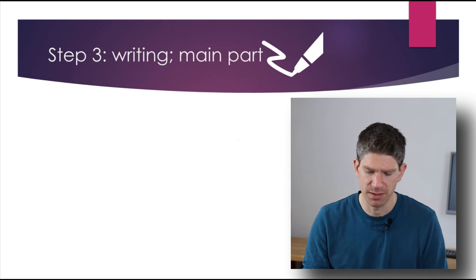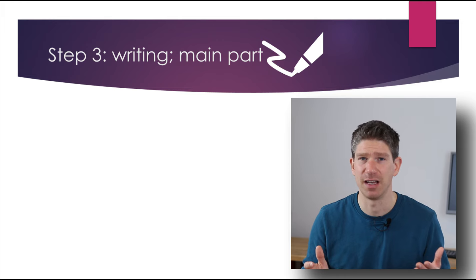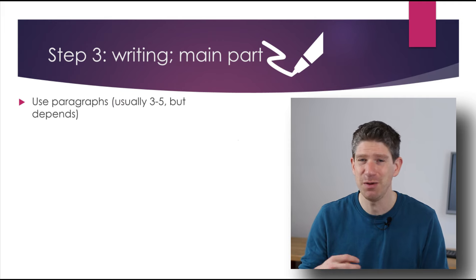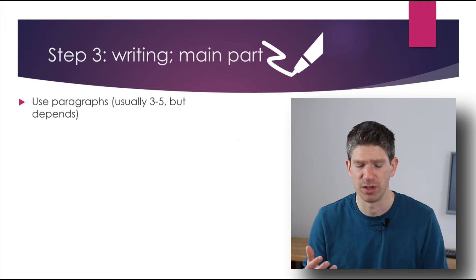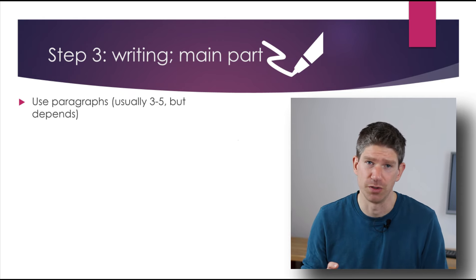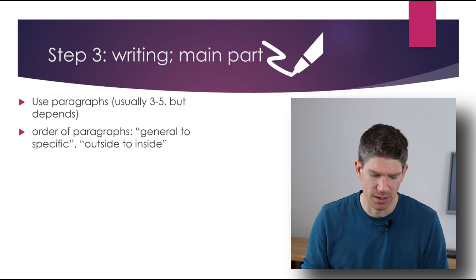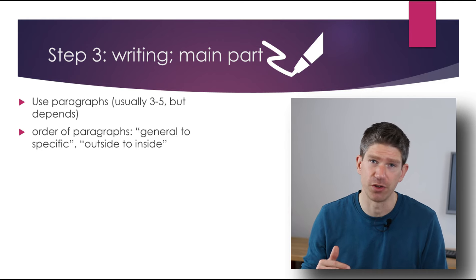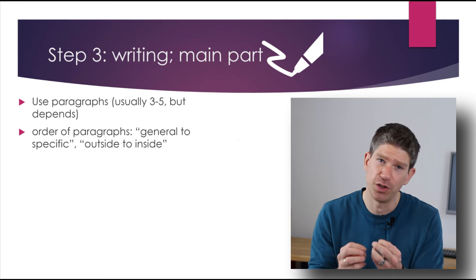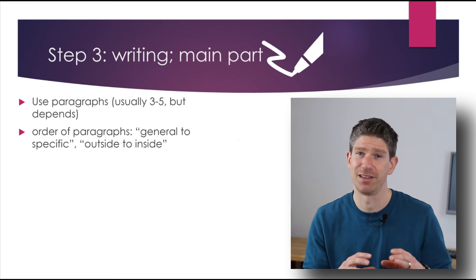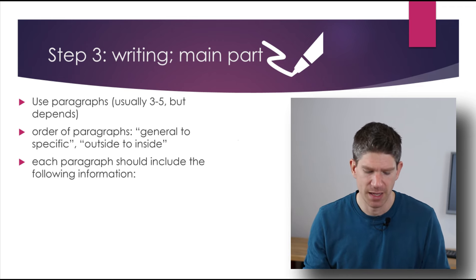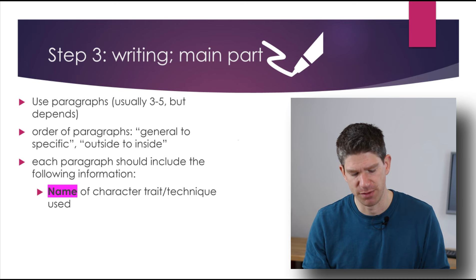When you write the main part, this is pretty similar in any kind of analytical text. But let me just go through it with you quickly. You would use paragraphs. I would say if this is an exam situation, normally three to five paragraphs, but of course depends on the scope of the text you've been given, etc., on the time you have. You would order the paragraphs so that they go from general, so more general information about the person to very specific things. And likewise, from things you could see on the outside to things that are more part of the person's character.